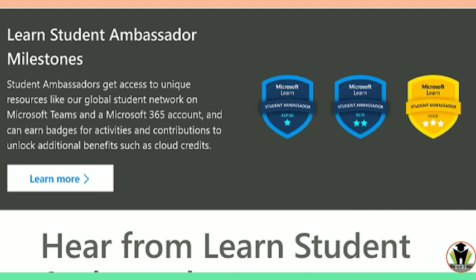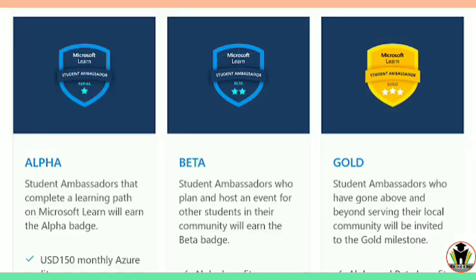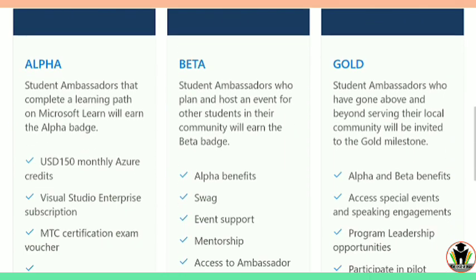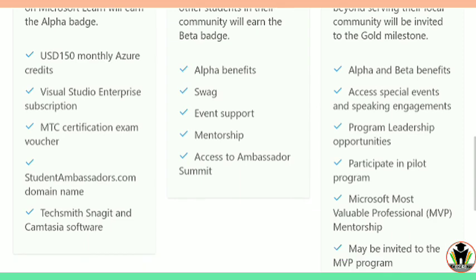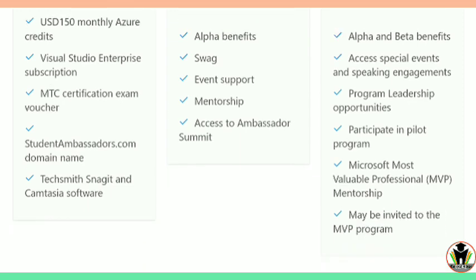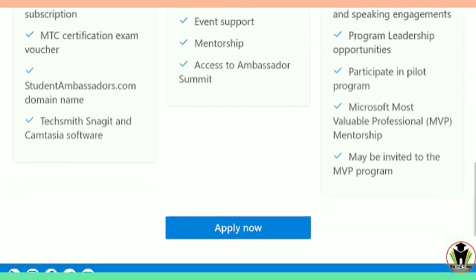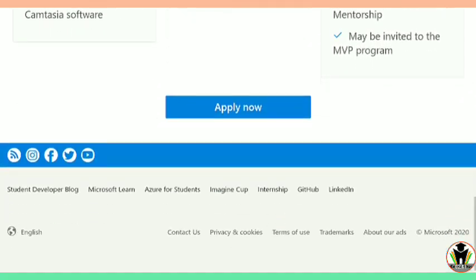There are three badges you can see on your screen. The three badges are namely Alpha, Beta, and Gold. What you get with each badge — the rewards — you can see on your screen. If you get Gold, then you get Alpha and Beta benefits, Microsoft Most Valuable Professional mentorship, and you may also be invited to the MVP program.